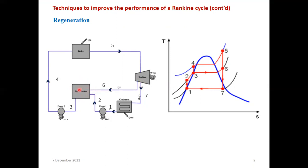By taking steam to the open heater, we are reducing the heat supply to the boiler. In a standard Rankine cycle without regeneration, we directly pump condensed water to the boiler, which takes more time to heat. If we preheat the water just before the boiler, it takes less time. That is how we reduce the heat supplied to the boiler.